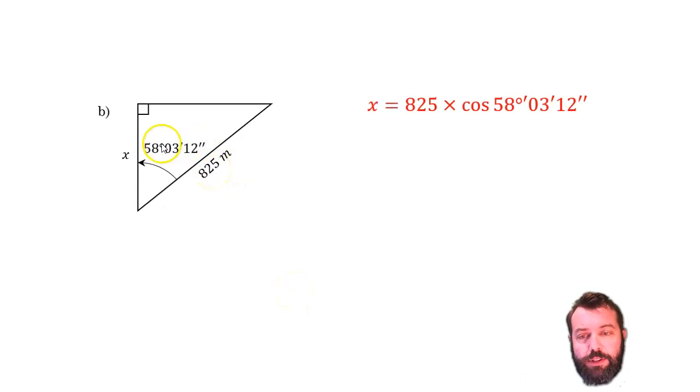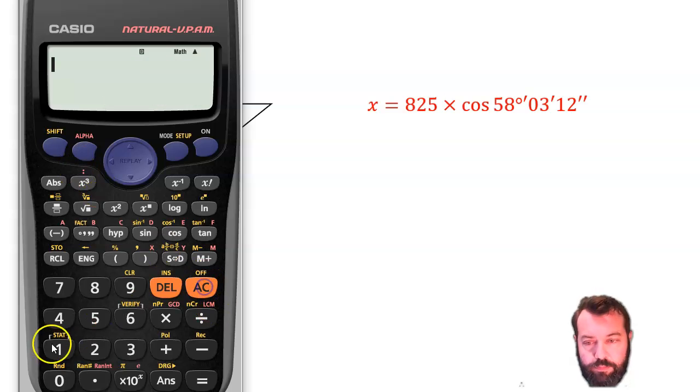So, 825 times the cos of 58 degrees, 3 minutes, 12 seconds. And now it comes to the calculator. 825 times the cos, 58 degrees, 3 minutes, 12 seconds. Close the brackets.